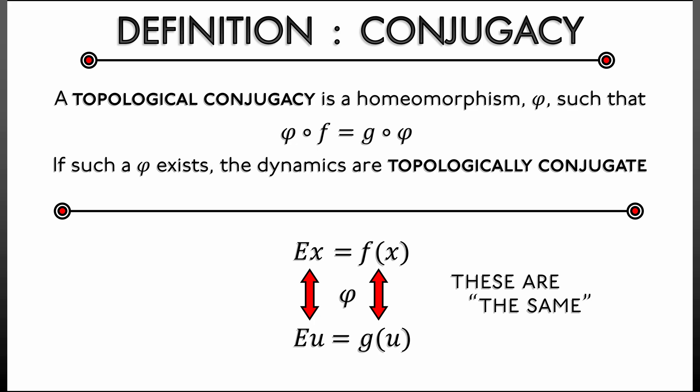This topological conjugacy really means that these are the same dynamical system. They have the same equilibria, they have the same periodic orbits. Every other orbit matches up bijectively via this topological conjugacy.